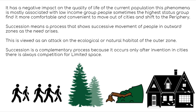Succession is viewed as an attack on the ecology or natural habitat of the outer zone. Cities have very little green space, while suburban areas and the periphery have more greenery. Those who can afford to leave the city center will occupy and encroach upon these natural spaces. Succession is a complementary process because it occurs only after invasion, and in cities there is always competition for limited spaces.